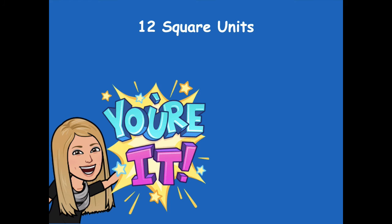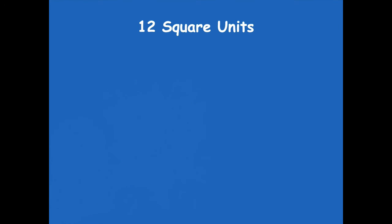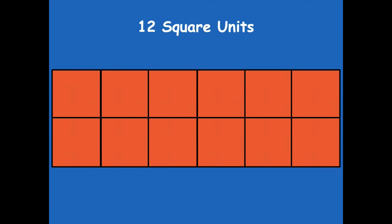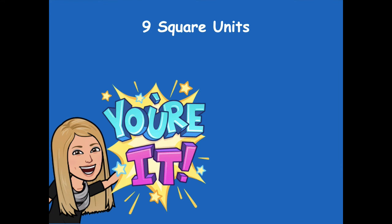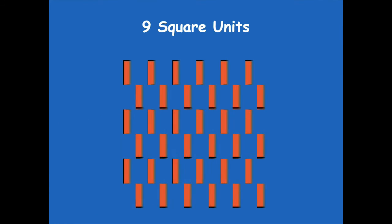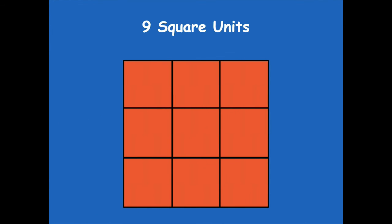Pause if you need more time; otherwise here we go. For twelve square units, I did two rows of six — you could also do six rows of two. That's just one way to model twelve square units. Now go ahead and model nine square units — make a rectangle with nine square units. It can't have a piece hanging off to the side; it's got to be a rectangle. Here's what I came up with: three rows of three.